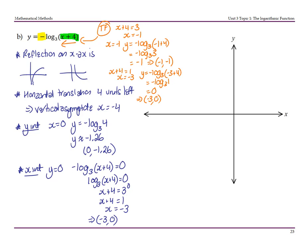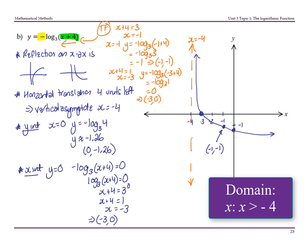Sketching: the vertical asymptote is at x equals negative 4. Using a ruler, we plot the point (negative 3, 0) and (negative 1, negative 1). Going tech-active, the y-intercept is approximately (0, negative 1.26). The graph is reflected in the x-axis. In tech-active you wouldn't bother with any working — you'd go straight to your calculator. Label: y equals negative log base 3 of (x plus 4).